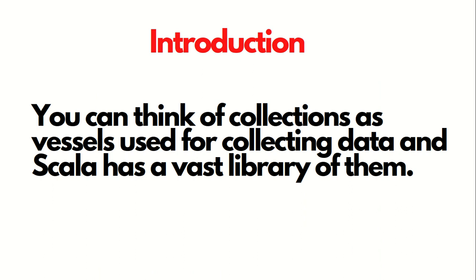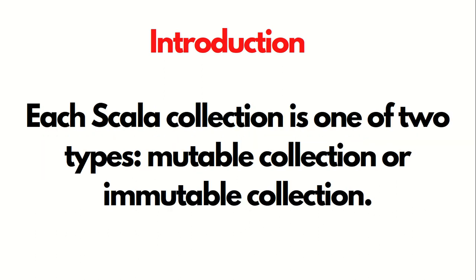First of all, what is collection? We can think of the collection as a vessel which is used for collecting data, and Scala has a vast library of them. Each Scala collection is one of two types: mutable collection or immutable collection. I already have talked about the meaning of mutable or immutable in one of the videos in the Scala playlist. Mutable means which we can change, immutable means which we cannot change.